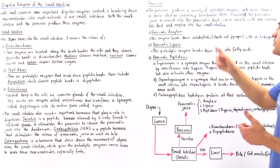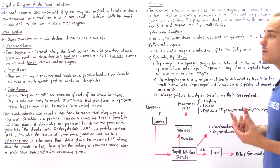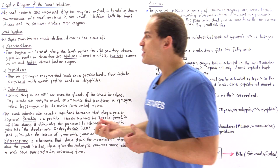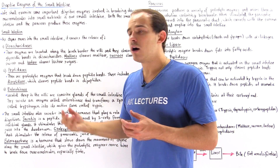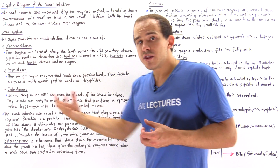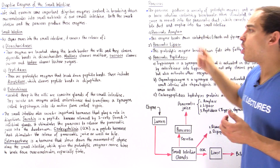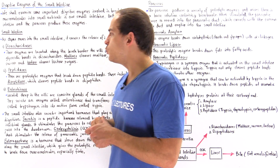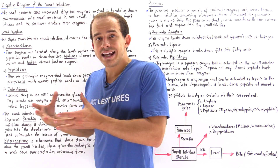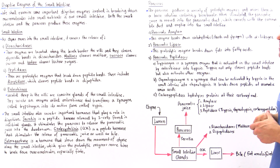The purpose of bicarbonate is to neutralize the acidity that comes with the chyme from our stomach. What bicarbonate does is increase the basicity of our solution, giving the solution inside the lumen of the small intestine a pH of about 8.5.